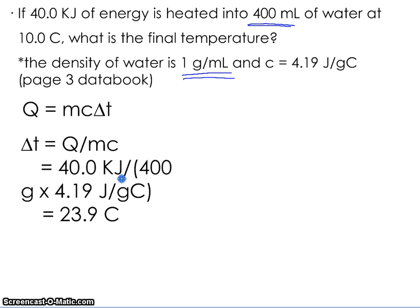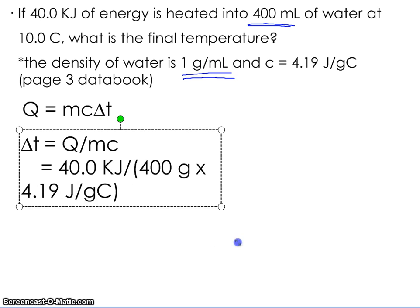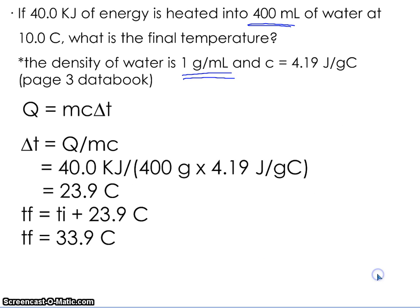We know Q = MCΔt, so ΔT = Q ÷ (MC). Our Q is 40 kilojoules divided by 400 grams times 4.19 J/g°C, which equals 23.9°C. Our final temperature must be our initial temperature plus the change in temperature: 10 + 23.9 = 33.9°C. So our final temperature is 33.9 degrees Celsius.